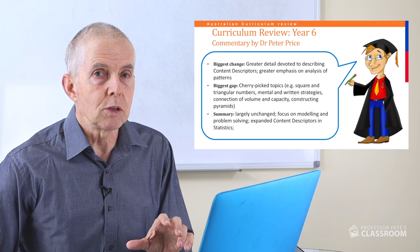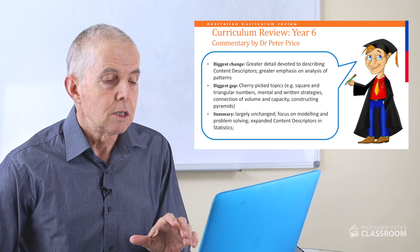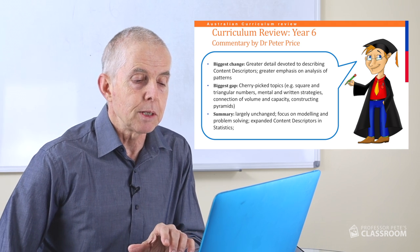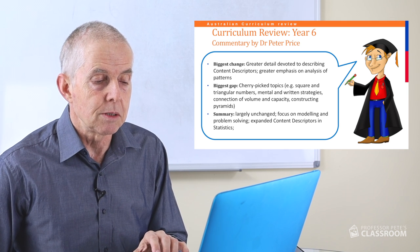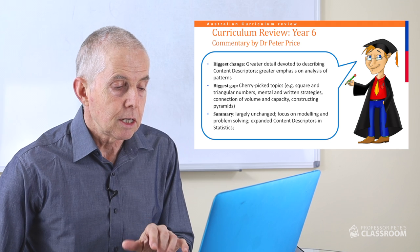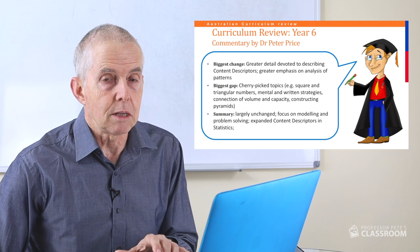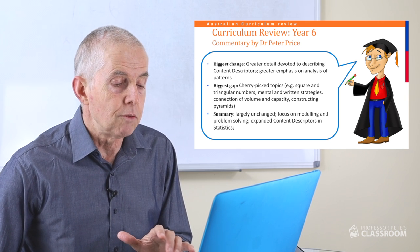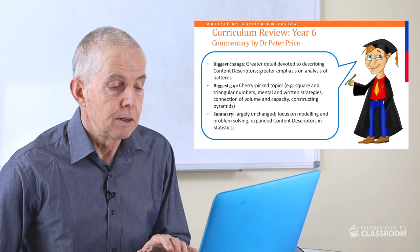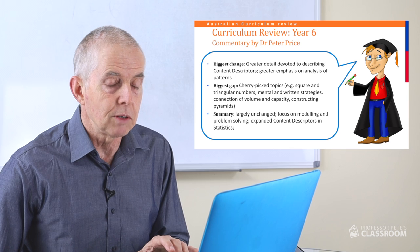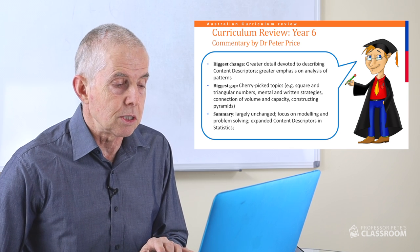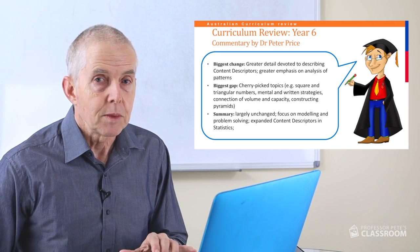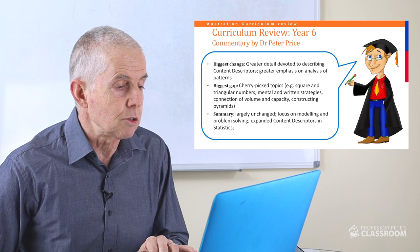The biggest gap in terms of what's been removed — there are a few small topics that feel like they're cherry-picked. For example, square and triangular numbers, mental and written strategies, connection of volume and capacity, and constructing pyramids. The overall summary is that it is largely unchanged. There is a bigger focus on modelling and problem solving, and there are expanded content descriptors in statistics — which is true across all year levels.